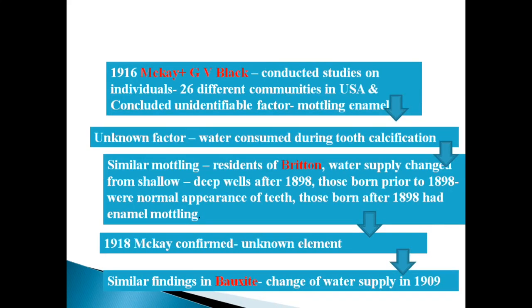McKay and GV Black published their findings together as 'an endemic imperfection of enamel of teeth heretofore unknown in the literature of dentistry' — the first published finding of dental fluorosis or mottled enamel. Still, they were not able to find the cause. In 1916, McKay and GV Black conducted studies on individuals from 26 different communities in the USA and concluded that a particular factor in the water was causing this mottling of the enamel, affecting teeth during calcification.